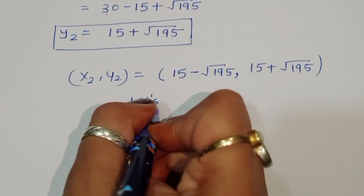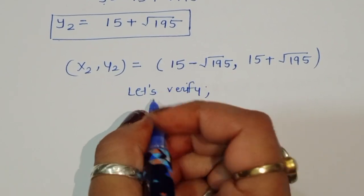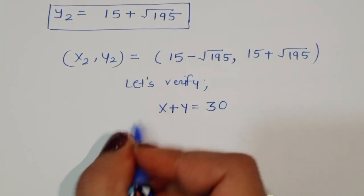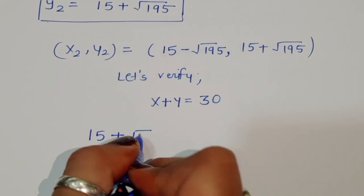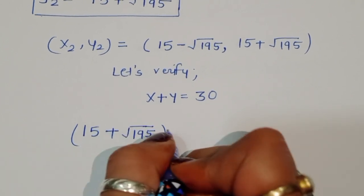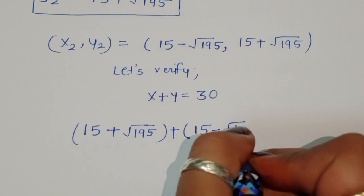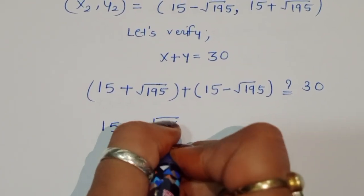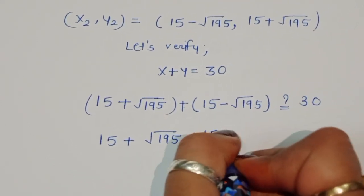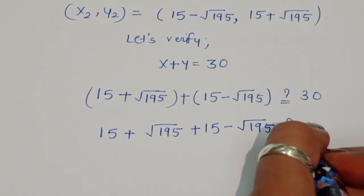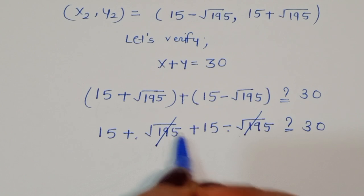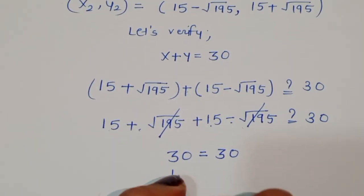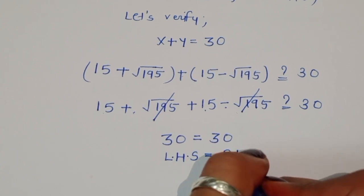Let us verify these values. For equation 1, x plus y equals 30: substituting x equals 15 plus square root of 195 and y equals 15 minus square root of 195, we get 15 plus square root of 195 plus 15 minus square root of 195. The square root terms cancel, giving 30 equals 30. So LHS equals RHS.